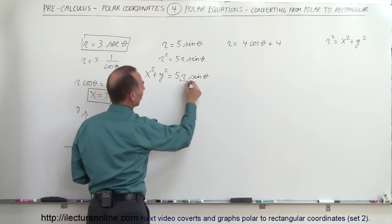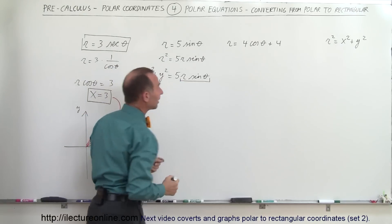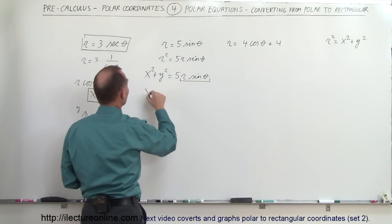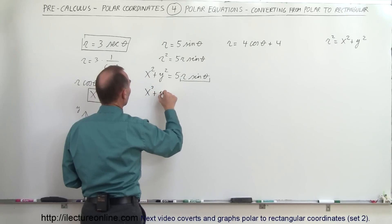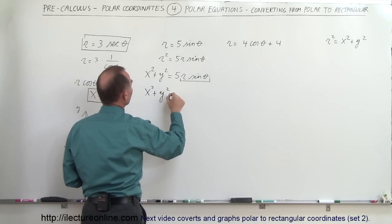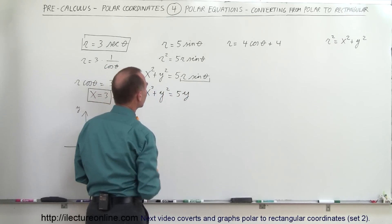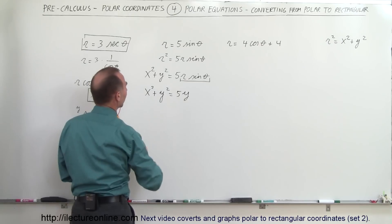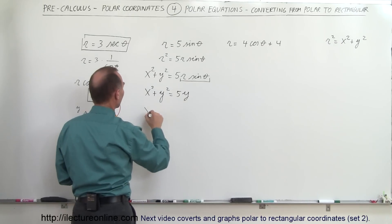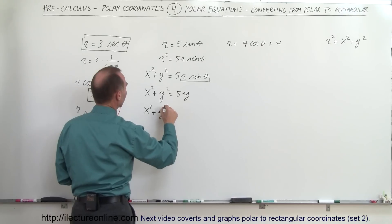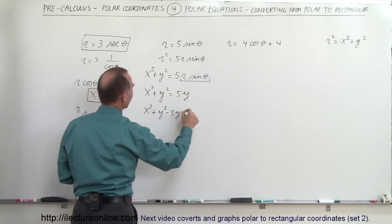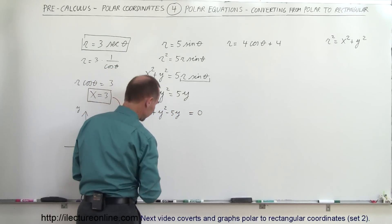We can take that and turn it into x squared plus y squared equals 5 times r sine of theta. Then we realize that r sine of theta equals y. So this becomes x squared plus y squared equals 5 times y. Then we bring the 5y to the left side, giving us x squared plus y squared minus 5y equals 0.